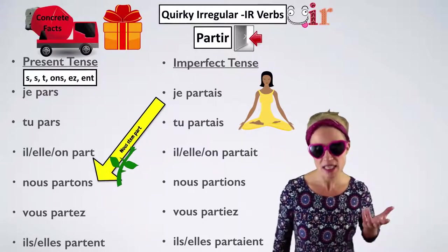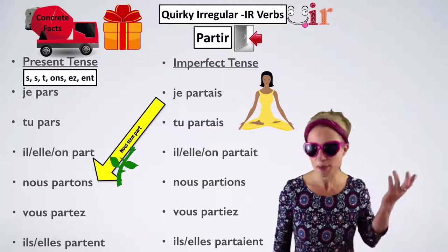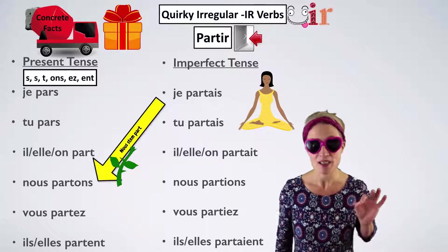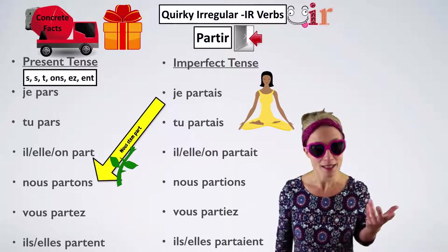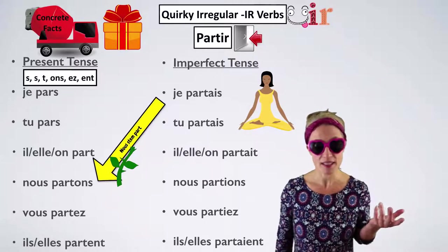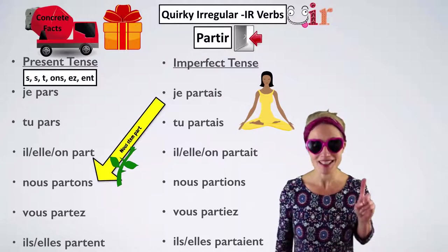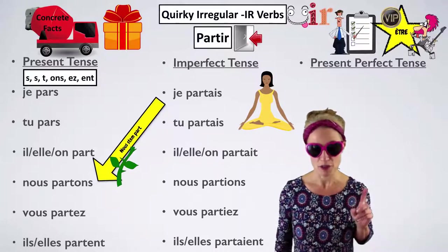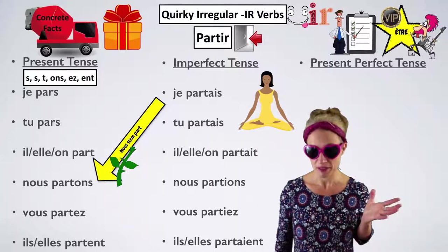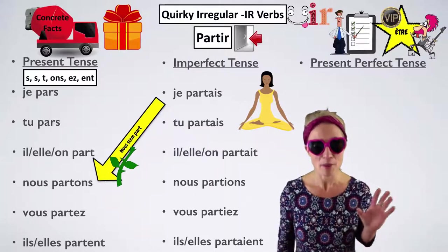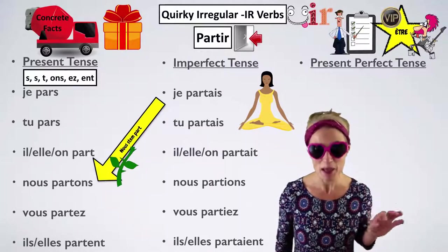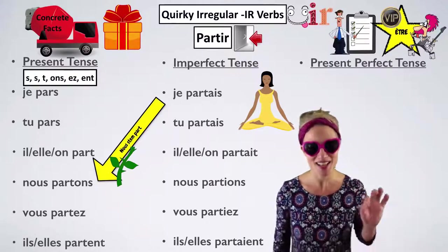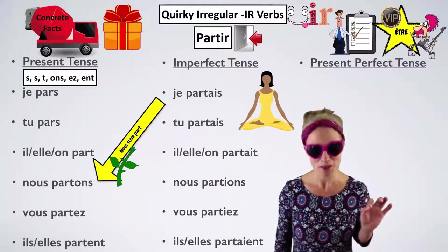And just for the sake of revision, let's remind ourselves of what 'partir' is like in the present perfect. First of all, 'partir' is a VIP verb — there are only about 15 of these and this is one of them. Very important indeed — VIP because they're used a lot. And also, mainly, because they use 'être' as their auxiliary verb in the present perfect.